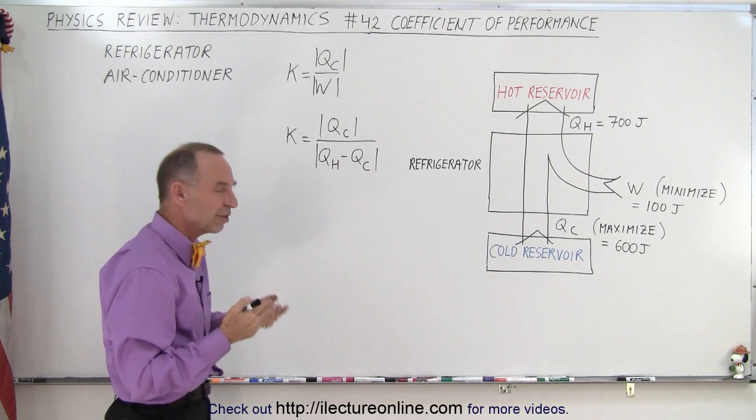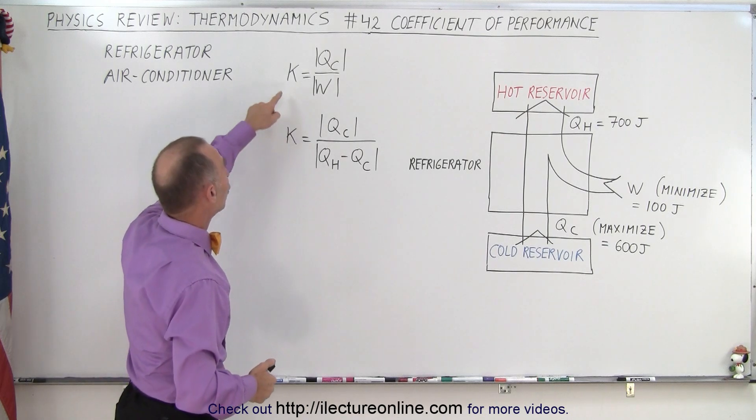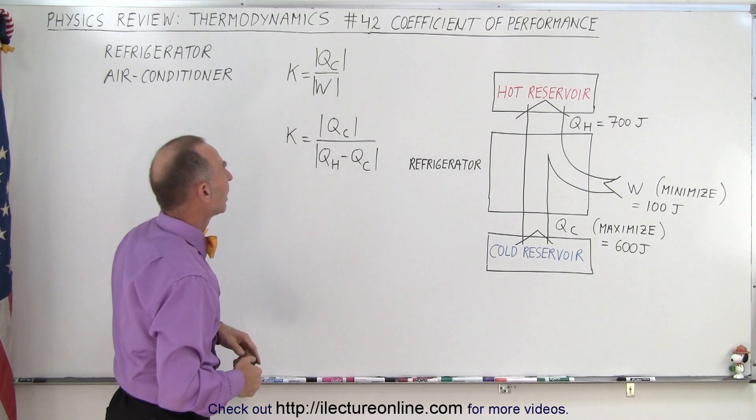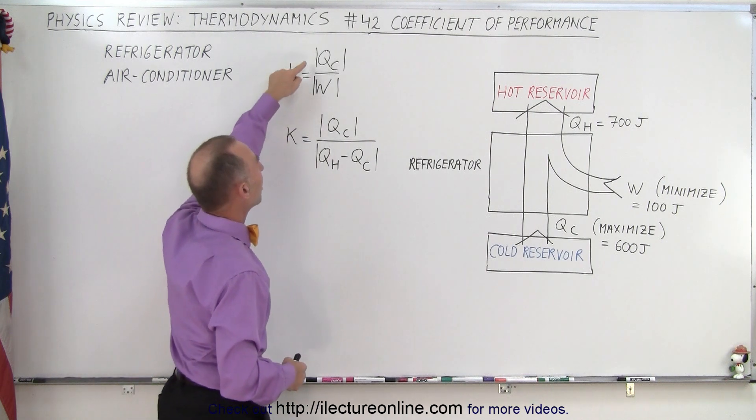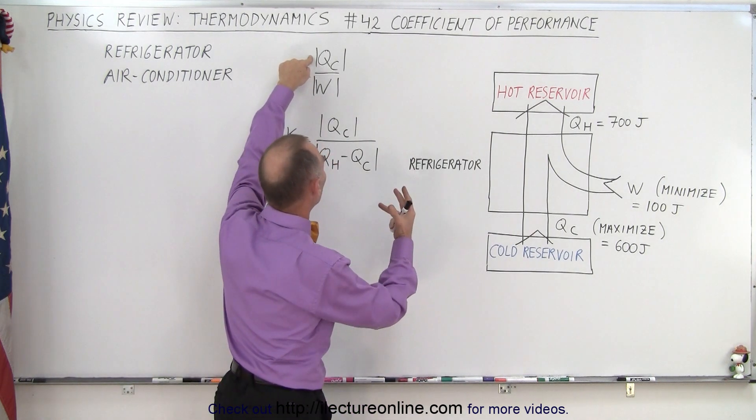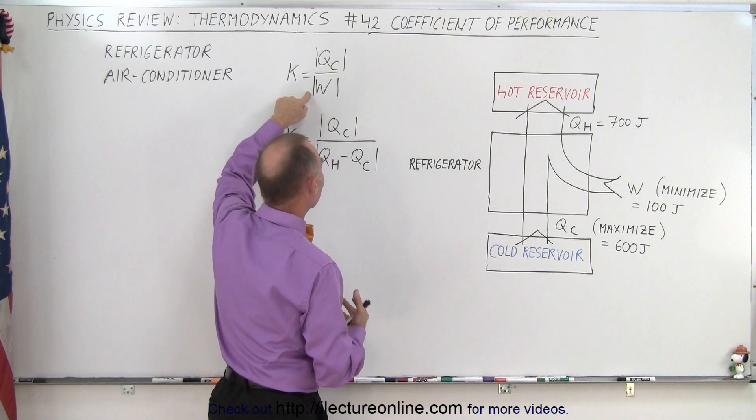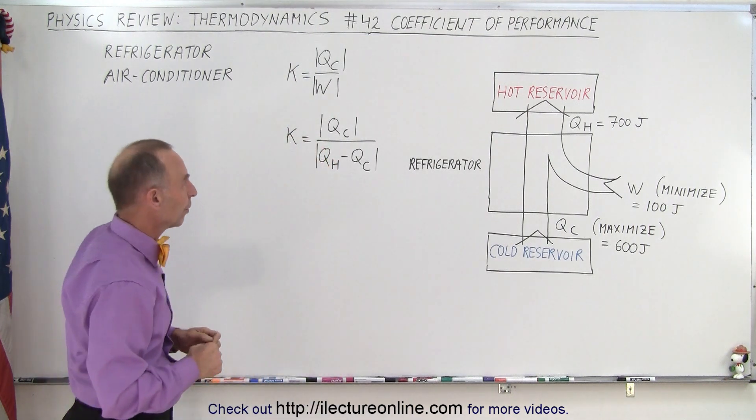So instead of talking about efficiency, we talk about the coefficient of performance and we use the letter K for that. And it's simply the ratio of how much heat you can draw out of the cold reservoir and divide that by the amount of work it requires you to do so.